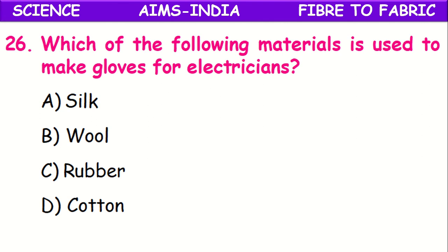Which of the following materials is used to make gloves for electricians? The gloves used by electricians should be bad conductors of electricity and should not pass current through them. Out of the options, rubber is a poor conductor of electricity — it won't allow any electricity through it, so electricians' gloves should be made with rubber for protection from electric shocks.